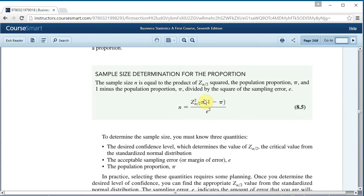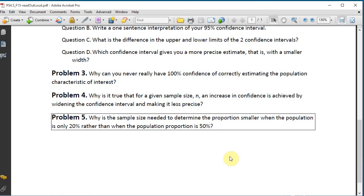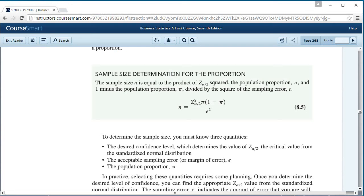But right here we've got the proportion times 1 minus the proportion. So the question asks 20% and 50%, which one basically requires, why is the sample size needed to determine the proportion smaller when it's only 20% rather than 50%?